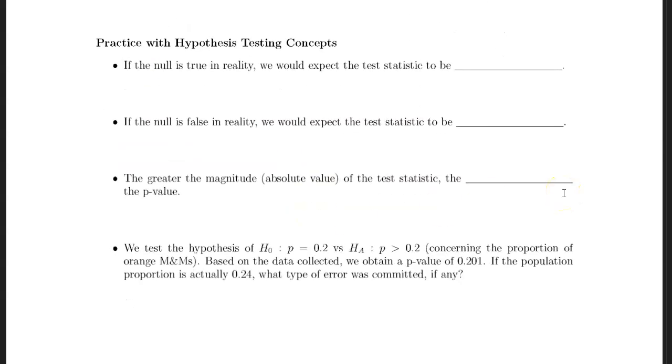Here are a few examples of the concepts involved in hypothesis testing. If the null is true in reality, we would expect the test statistic to be small, because it's going to be something with a high p-value. Remember, small test statistics are likely. Most test statistics are between negative 1 and 1. In other words, those are the ones that are most likely to appear if the null hypothesis is true.